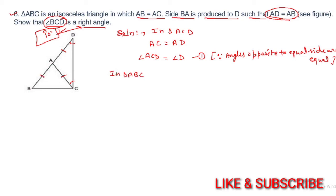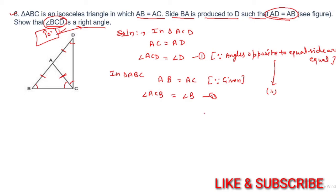Similarly, in triangle ABC, AB equals AC, so the two angles are equal: angle ACB equals angle B. Take this as equation 2, with the same reason — angles opposite to equal sides are equal. Now in triangle DBC, the sum of all three angles equals 180 degrees: angle D plus angle B plus angle DCB equals 180 degrees.